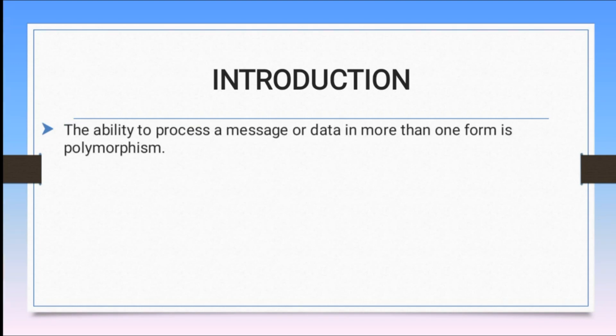The ability to process a message or data in more than one form is polymorphism. We will break it into poly and morphism. Poly means many and morphism means form. So we combine them as many forms.